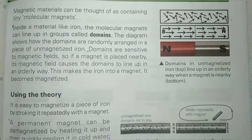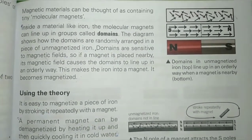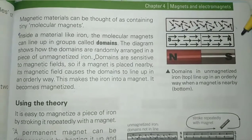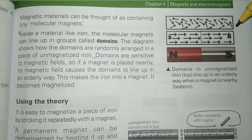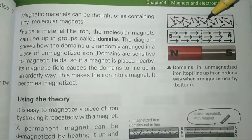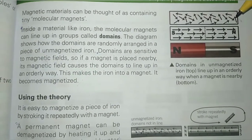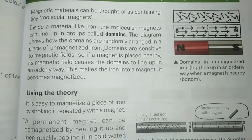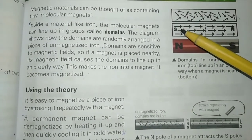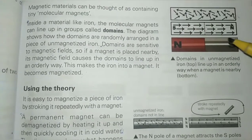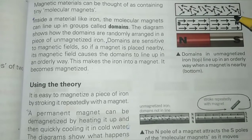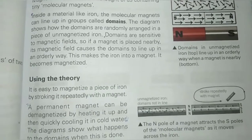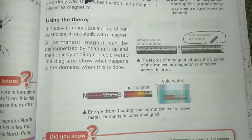Magnetic material like iron and steel is thought to contain tiny molecular magnets. Inside a material like iron, the molecular magnets can line up in groups called domains. In an unmagnetized iron rod, the domains are randomly arranged. These domains are sensitive to magnetic fields — as soon as we put a magnet close to the iron, the domains start to line up in an orderly way, and the iron becomes magnetized.